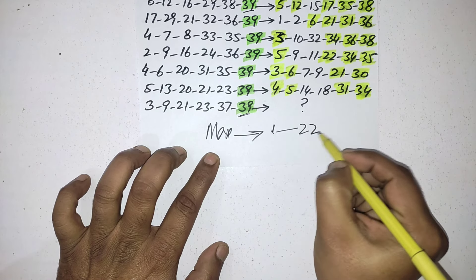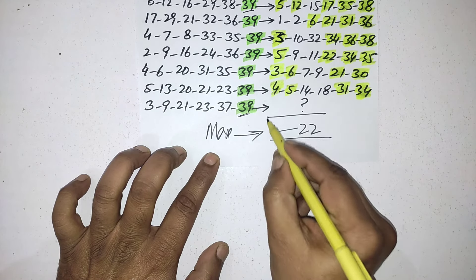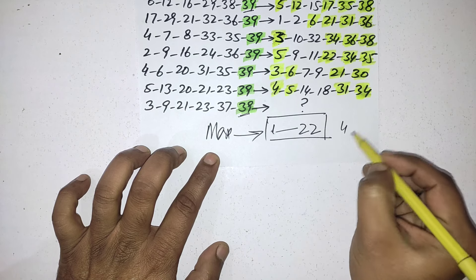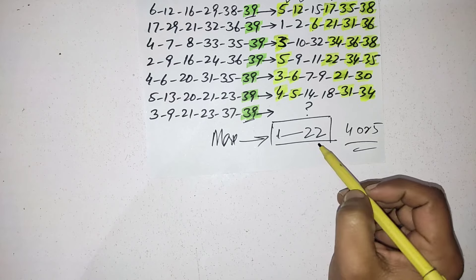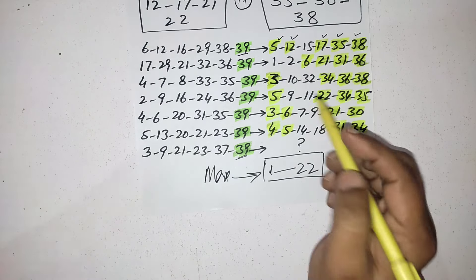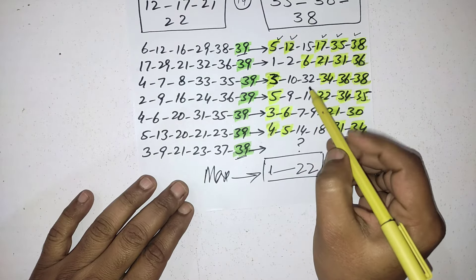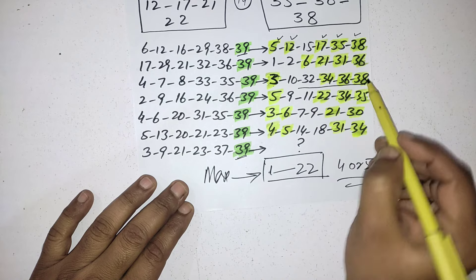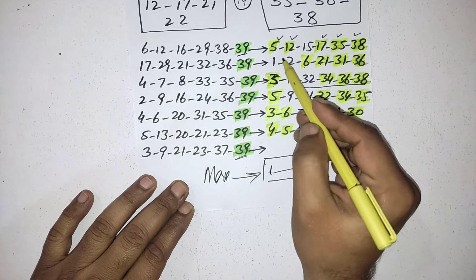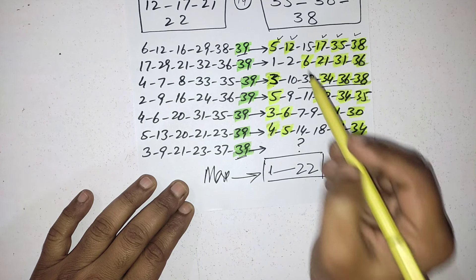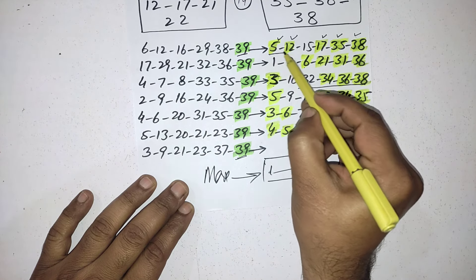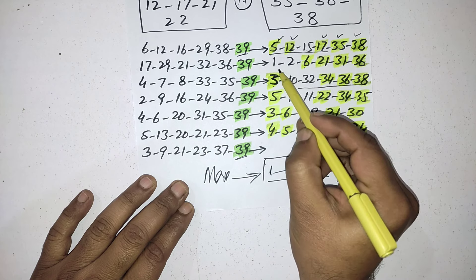Maximum you should select from 1 to 22. The maximum numbers you should select from here. Four or five numbers will come between 1 to 22 because you can see only one time they pick the maximum numbers between 30 to 39. Remaining five draws you can see they pick the maximum numbers between 1 to 22.